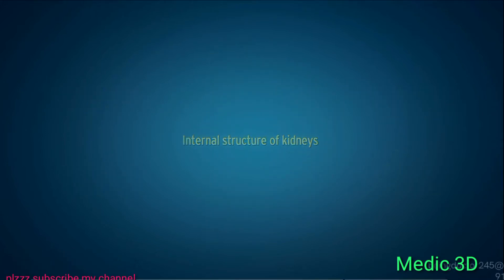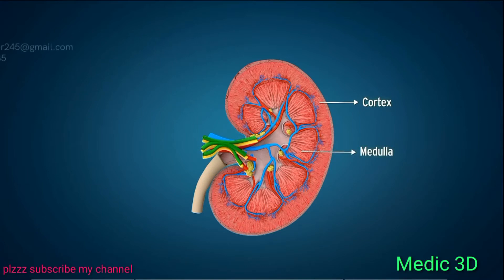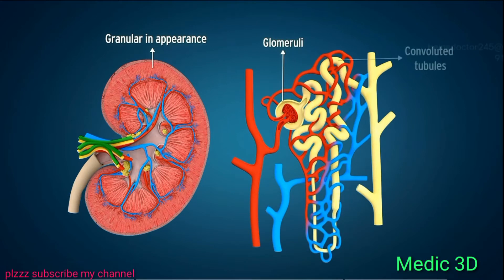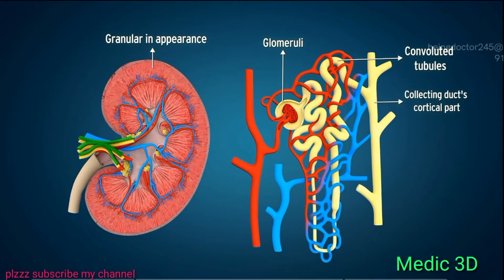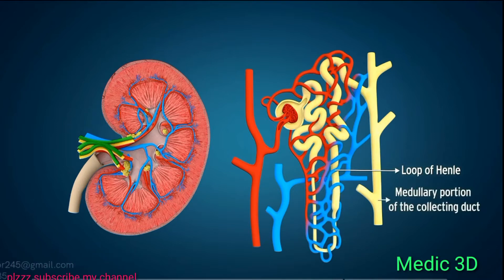When the kidney is cut vertically in half, two distinct regions are visible: the outer cortex and the inner medulla. The cortex is granular in appearance and includes all glomeruli, convoluted tubules, and the collecting ducts' cortical portion of nephrons. The medulla contains a loop of Henle, a medullary portion of the collecting duct, and blood vessels arranged in parallel, giving it a striated appearance.